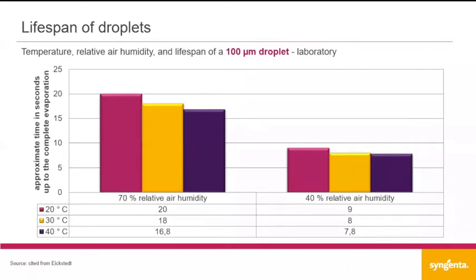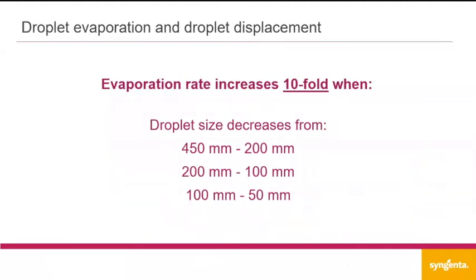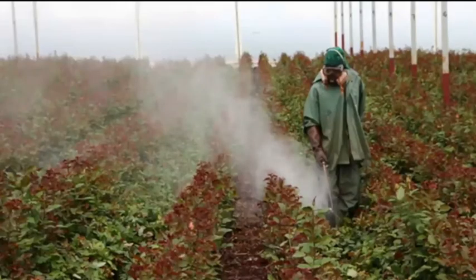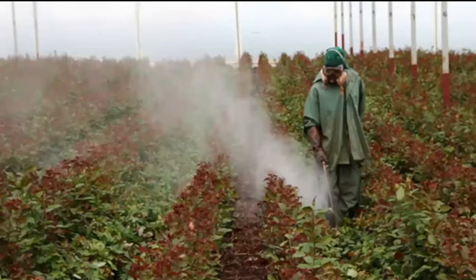When we look at the evaporation rate: the evaporation rate increases tenfold when the droplet size increases from 450 to 200 microns down to 200 to 100 microns — a tenfold increase. You can see how important your droplet size is. Bigger droplet sizes have poor coverage capacity, but when the product is longer in solution, the uptake will take longer — more time to get into the leaf. Looking at this picture again, we see this cloud of mist above the crop, caused by high pressure and small droplet size.